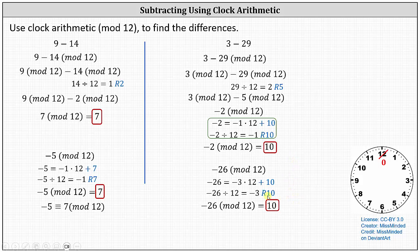We can also state that negative 26 is congruent to 10 mod 12. Checking on the clock for negative 26 mod 12, we start with the hour hand at 0 and go back counterclockwise 26 hours: negative 12, negative 24, negative 25, negative 26 — giving us the result of 10.